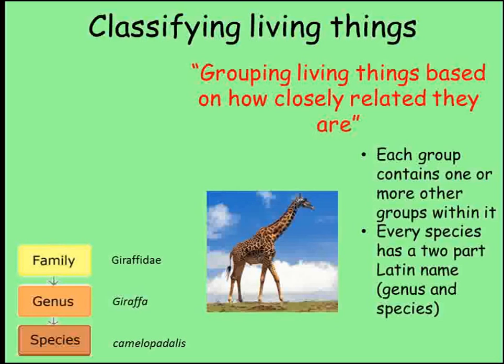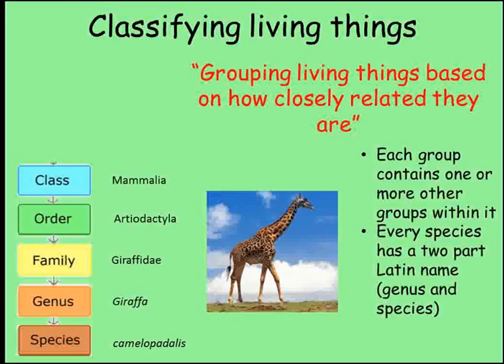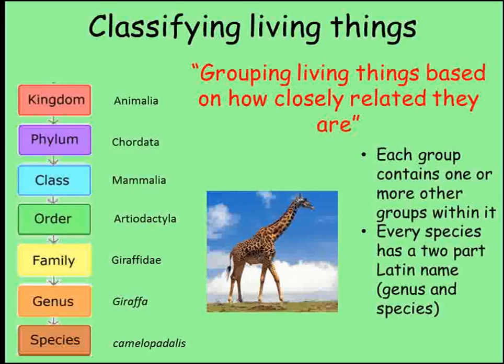Each genus is placed into a family, each family within an order, each order within a class, each class within a phylum, and each phylum belongs to one of five different kingdoms. These are the biggest groupings used in classification, and they are: animals, plants, fungi, protoctista and prokaryotes.